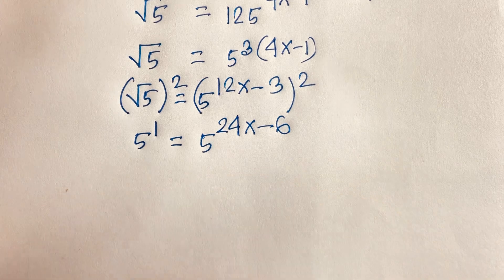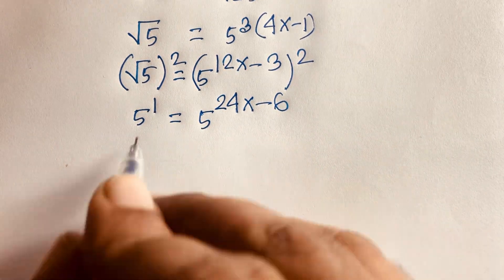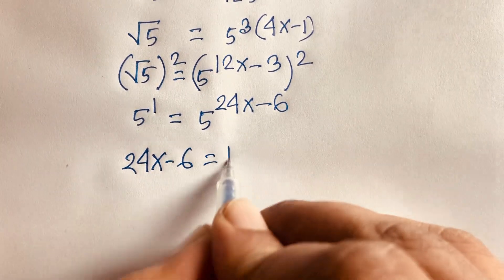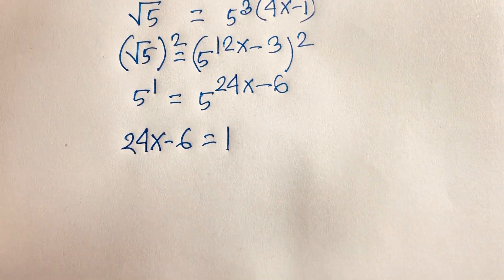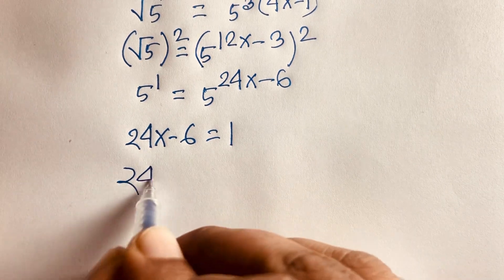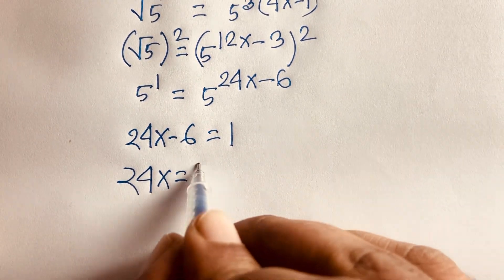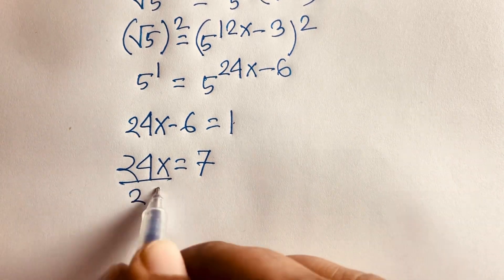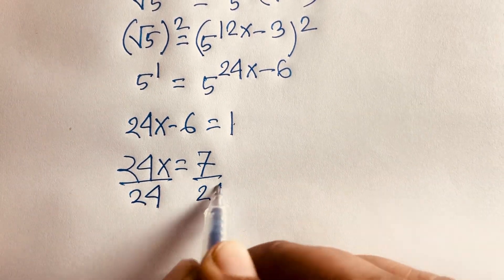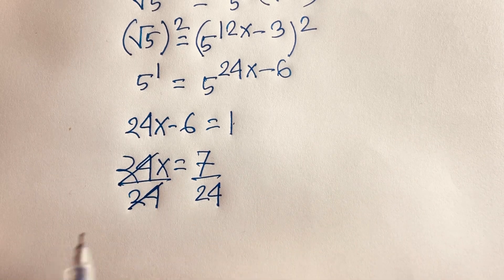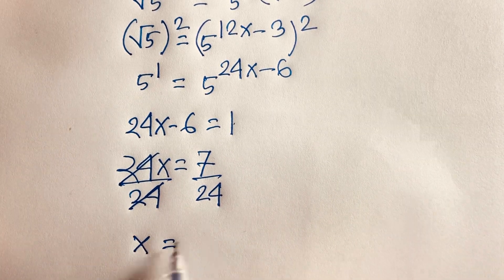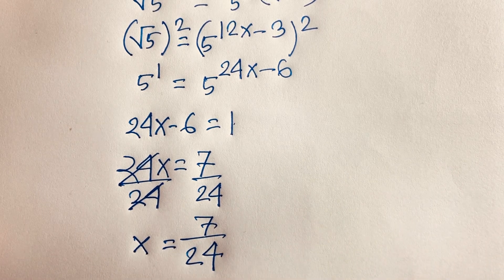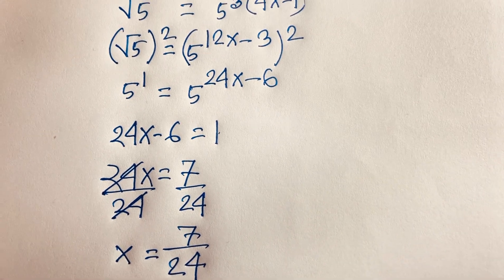The exponent on the left is 1, and the base is the same, so I can say 24x minus 6 equals 1. Therefore 24x equals 7 (that is 1 plus 6). Then dividing both sides by 24, we find out x equals 7 over 24. This is our final answer.